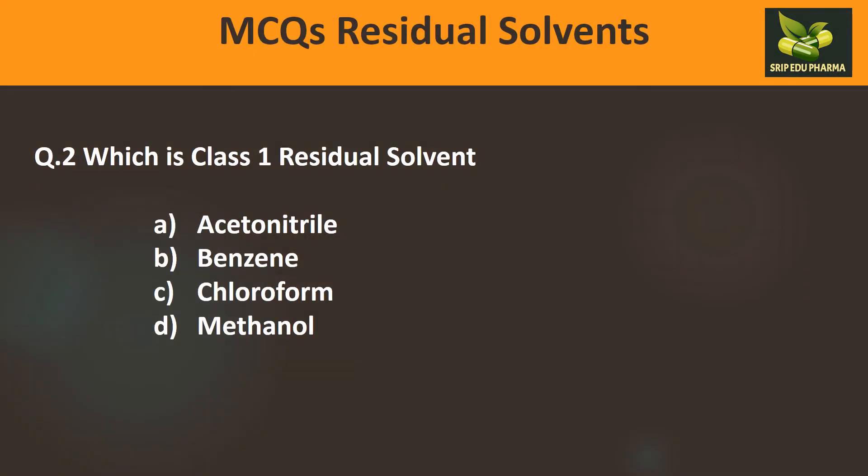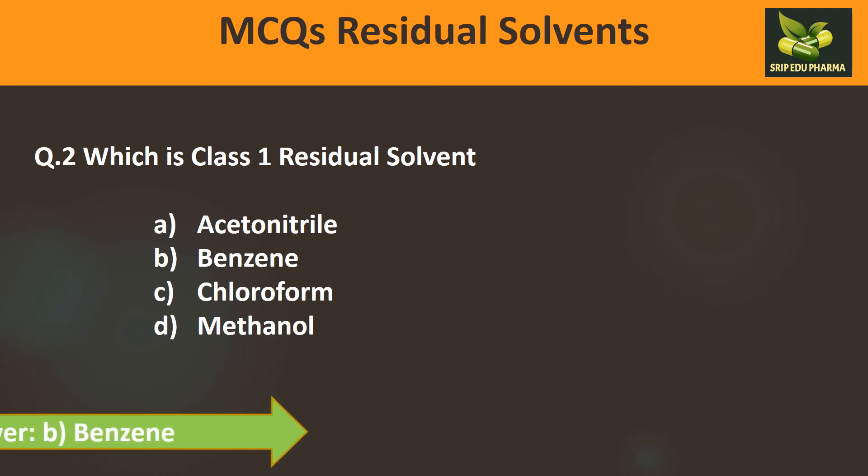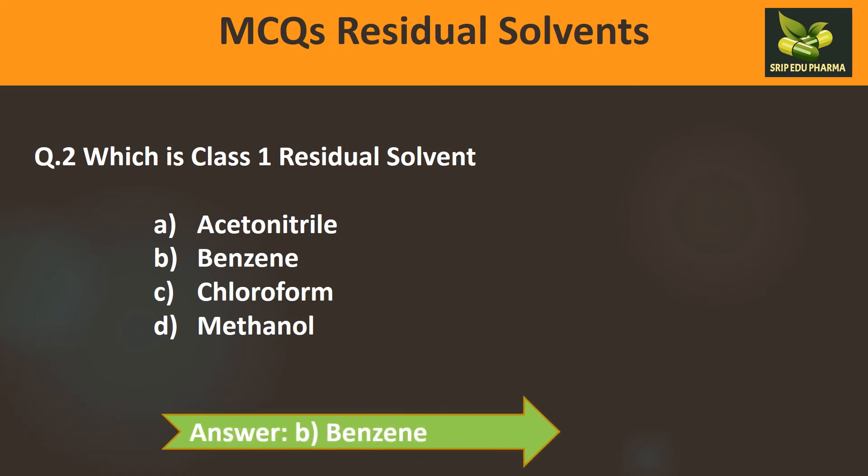Question 2: Which is a Class 1 residual solvent? A) Acetonitrile, B) Benzene, C) Chloroform, D) Methanol. Except for benzene, all three others — acetonitrile, chloroform, and methanol — are Class 2 solvents. Therefore, the answer is B: benzene.